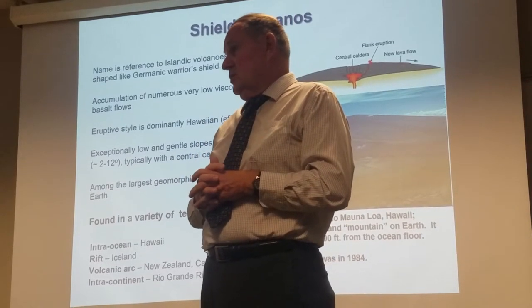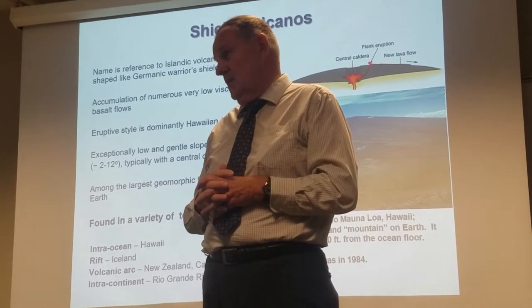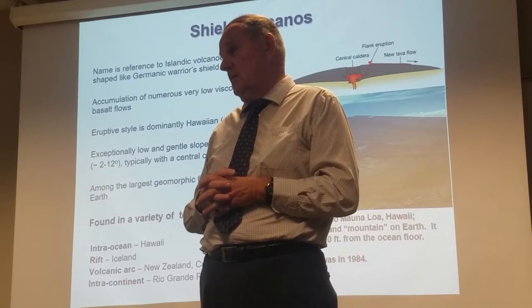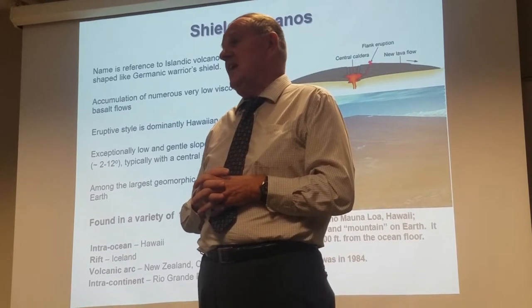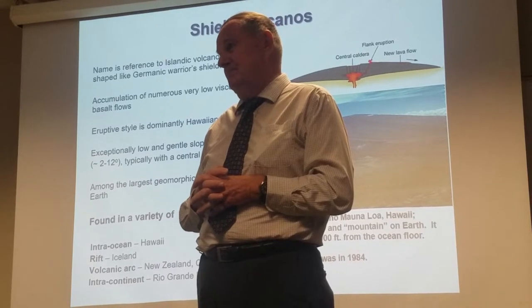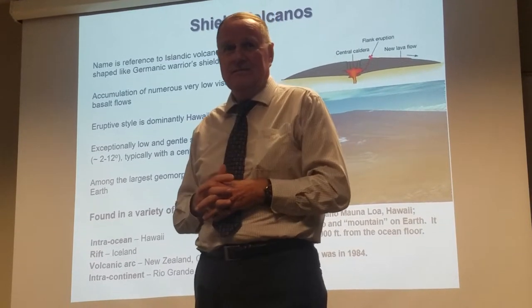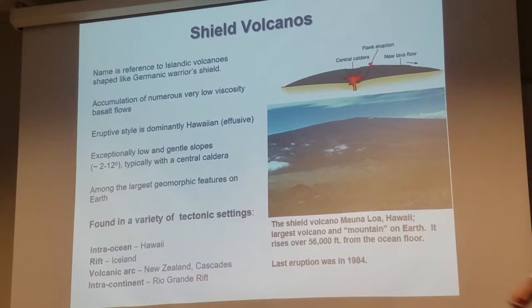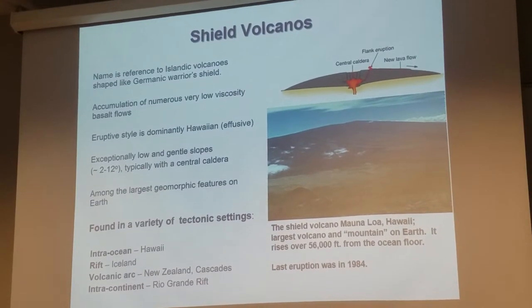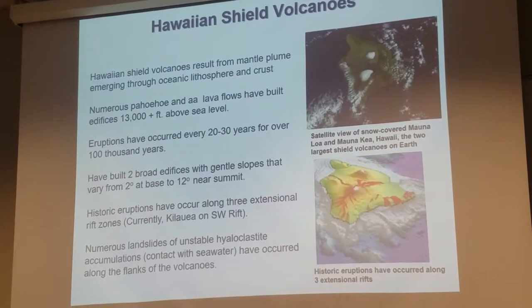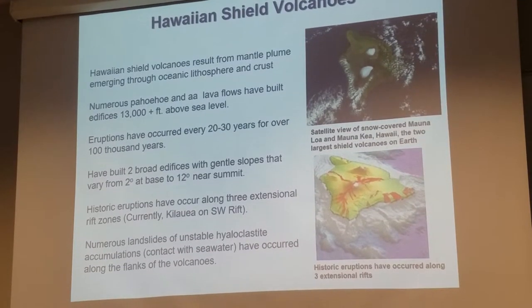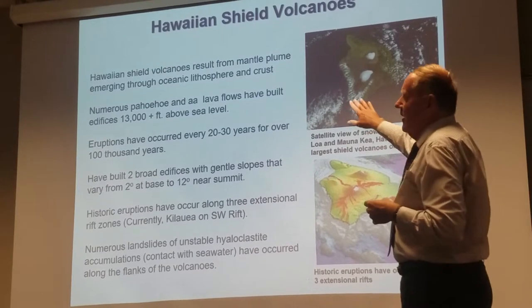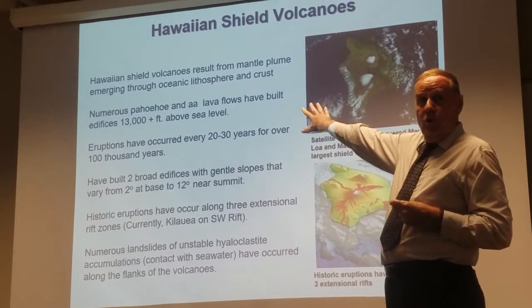The largest mountain in the solar system is Olympus Mons on Mars, and it is almost 90,000 feet high — it's huge. And it's also shield-shaped. These shield volcanoes typically result from mantle plume emergence.